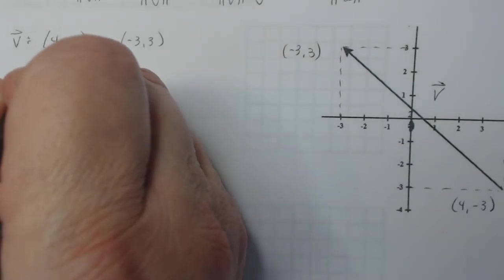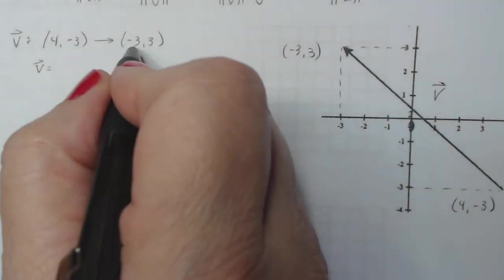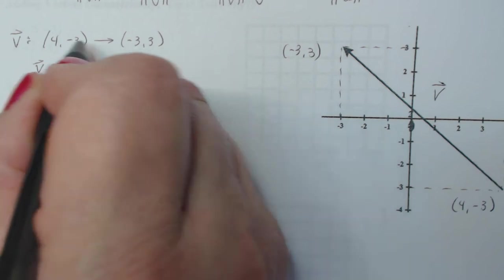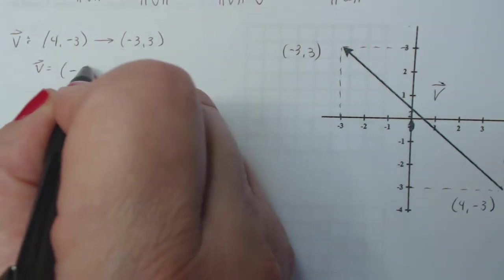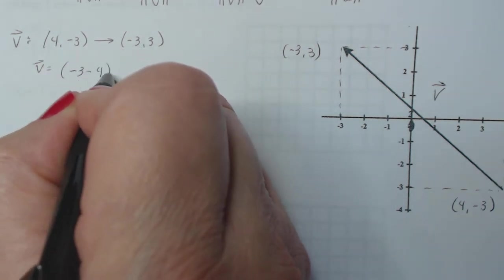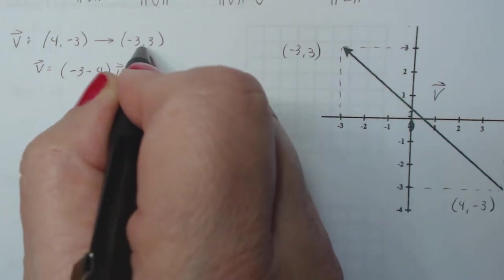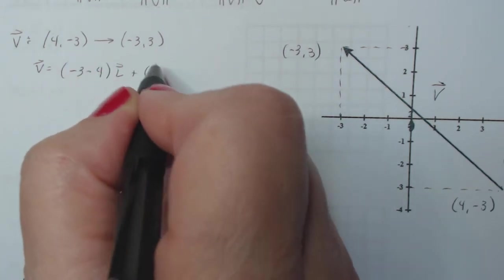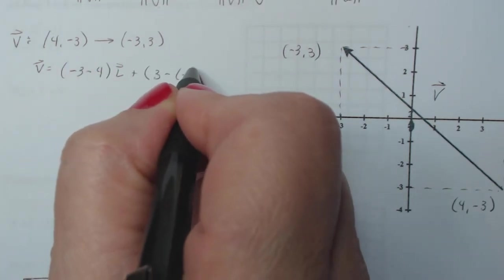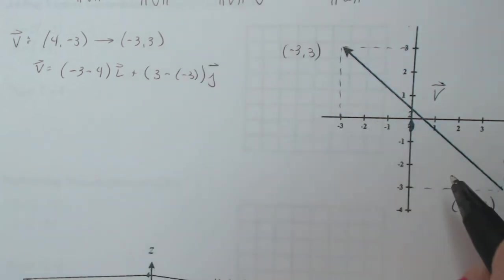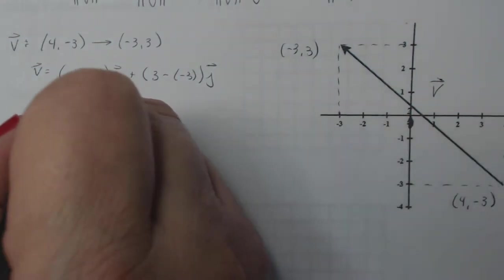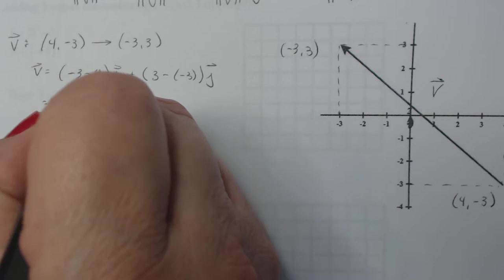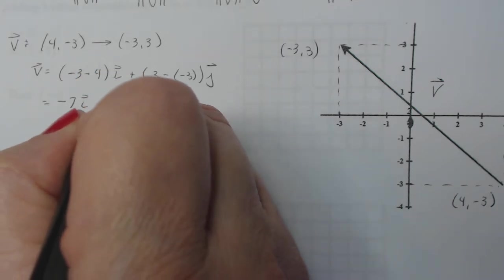So I think about the components here. I have to think my i component is going to be the change in the x's starting this one: (-3 - 4)i plus I got to start here (3 - (-3))j. So let's see, what does that become? It becomes -7i + 6j.